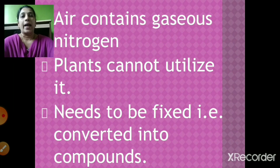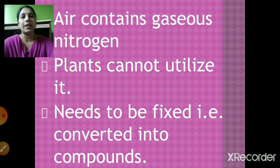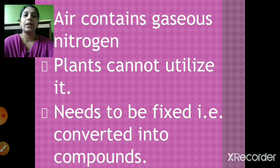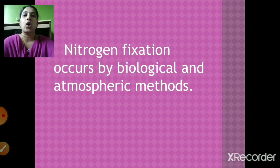Air contains gaseous nitrogen, but plants cannot utilize this gaseous nitrogen directly. However, plants require nitrogen for their growth, so it needs to be fixed — that is, converted into compounds such as nitric acid, nitric oxide or nitrogen dioxide. Nitrogen fixation occurs by biological and atmospheric methods.